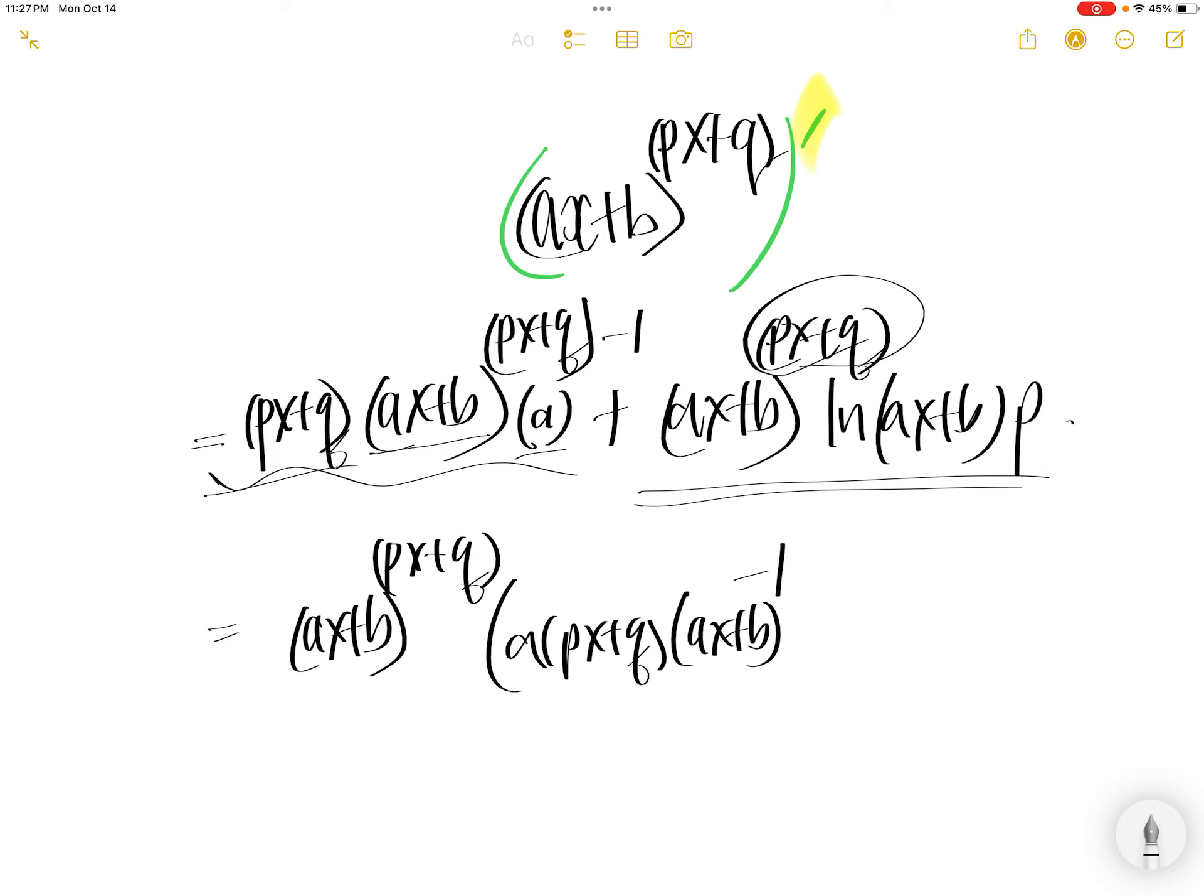You are done with this, now focus on that. Pull out AX plus B to the power of PX plus Q. You have P, LN of AX plus B.